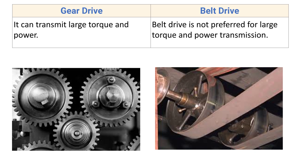Gear drive can transmit large torque and power, and has wide application — from small torque in toys and watches to high torque in heavy machinery like automobile gearboxes and ships. Belt drive is not preferred for large torque and power transmission because of its flexible nature. Since motion is transmitted due to friction force, if the load increases, slip may occur, and that is why belt drive cannot be used for transmitting large torque and power.